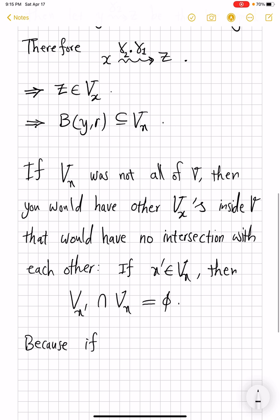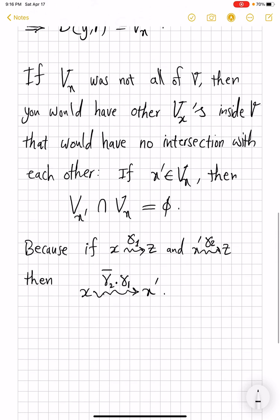Because if they had some common point, so if x can be connected to z by, say, γ₁, and then x prime can also be connected to z by γ₂, then x can be connected to x prime by going γ₁ and then concatenating by reversal of γ₂. Which would mean then x prime belongs to Vₓ. But that is a contradiction. So if x prime does not belong to Vₓ, if Vₓ is not all of your space and you pick some point outside it, then V of that has no intersection with Vₓ. And this is the proof.